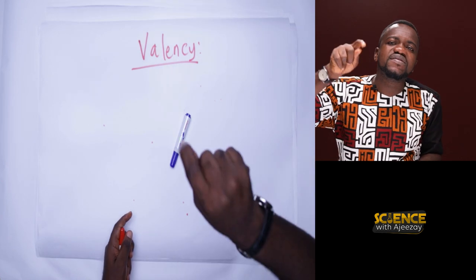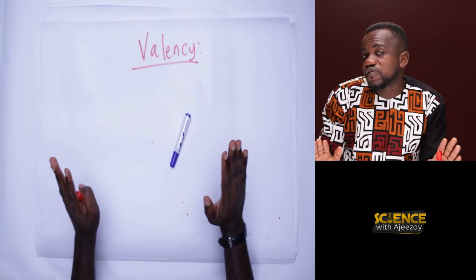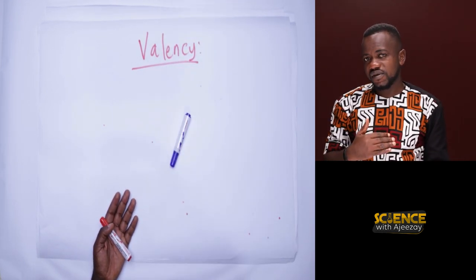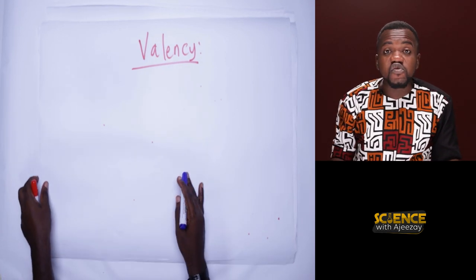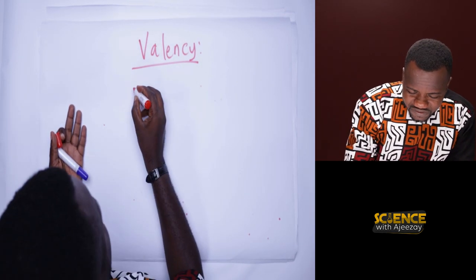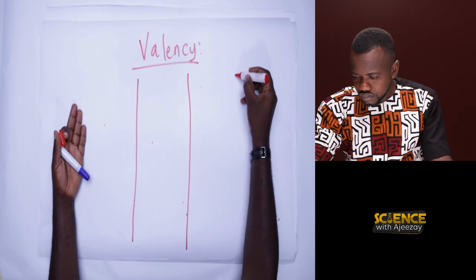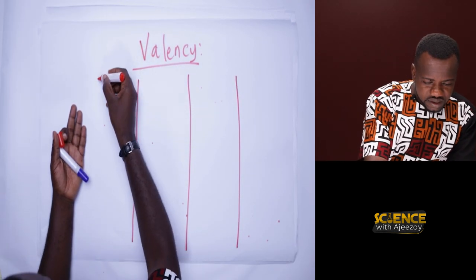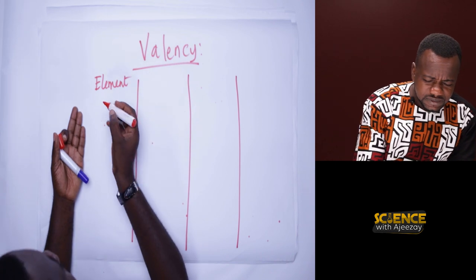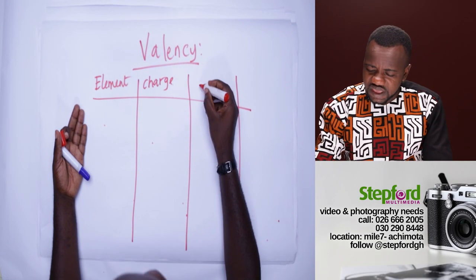Valency is the number of electrons an atom carries — or the number of electrons an atom gives or accepts. Let's take a few examples. We'll set up a small table with the elements, the charge each element forms, and then the valency.